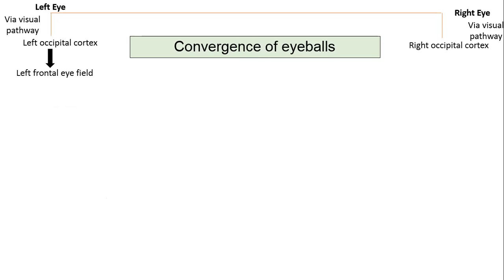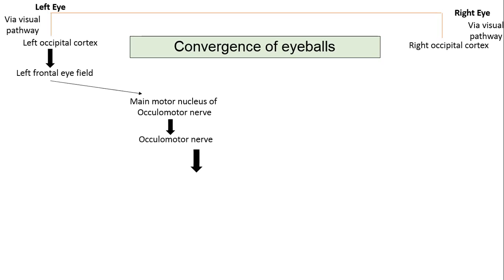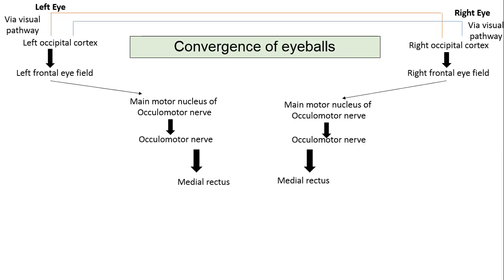The third change is convergence of the eyes. The impulses reach the occipital cortex and the frontal eye field as described previously. From the frontal eye field, corticonuclear fibers project to the main motor nucleus of the third cranial nerve — the oculomotor nerve — which supplies the medial rectus muscle of the eyeball. The same changes are seen in the opposite eye simultaneously, causing contraction of the medial rectus, which moves the eyeballs medially — convergence of the eyeballs — so that both eyeballs come close to the nose on both sides.